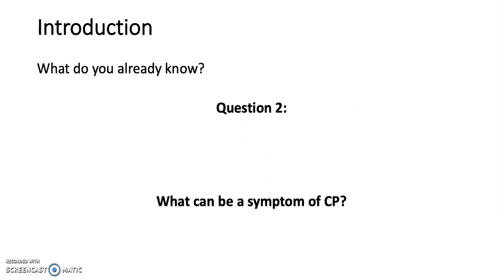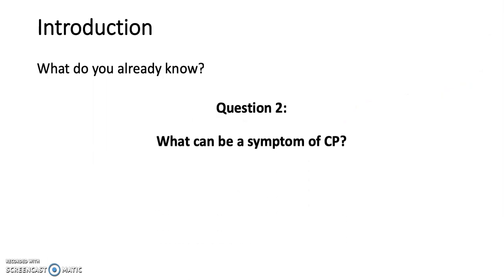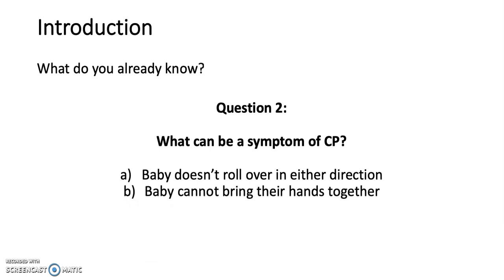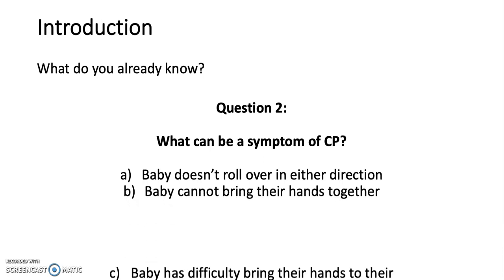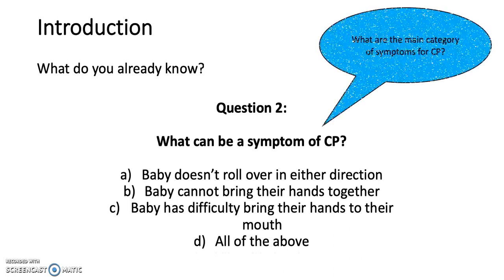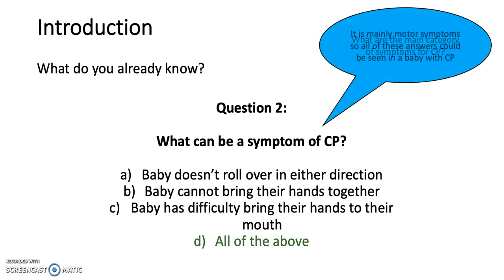Question 2: What can be a symptom of cerebral palsy? A. The baby doesn't roll over in either direction. B. The baby cannot bring their hands together. C. The baby has difficulty bringing their hands to their mouth. Or D. All of the above. The answer is D, all of the above.